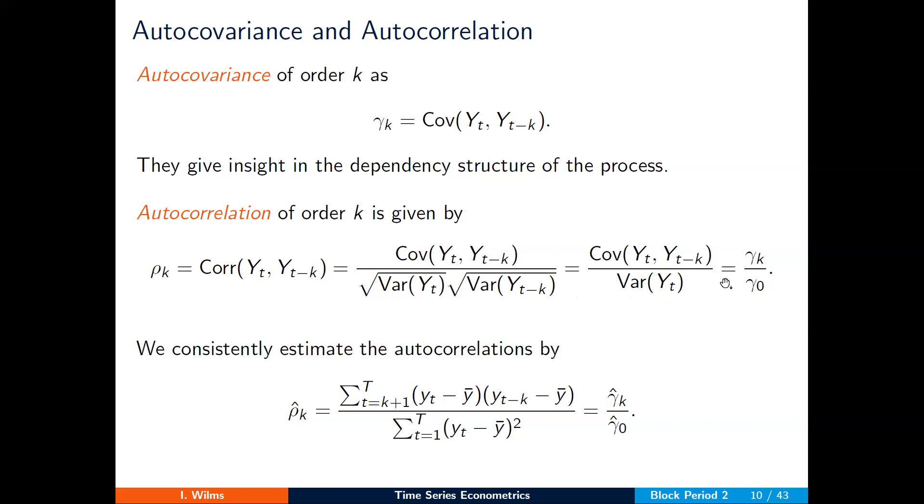Then the autocorrelation at lag k, denoted by ρk, is nothing more than the ratio of the autocovariance of order k to the variance of yt, denoted by γ₀.